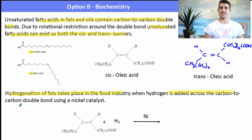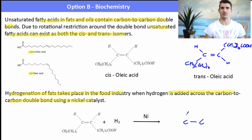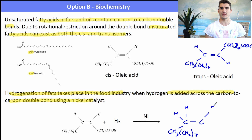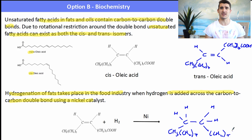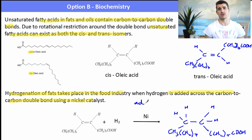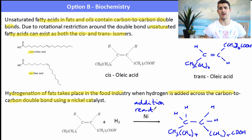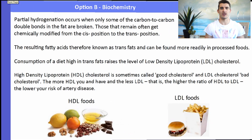Hydrogenation of fats takes place in the food industry, where we add hydrogen across the double bond using a nickel catalyst. We perform an addition reaction to break the double bond and make a saturated fatty acid. Starting with the double bond, hydrogen is added across it and it becomes a saturated molecule - instead of having just one hydrogen attached, the double bond is broken and we have two. That's known as an addition reaction because we're adding hydrogen across the double bond.